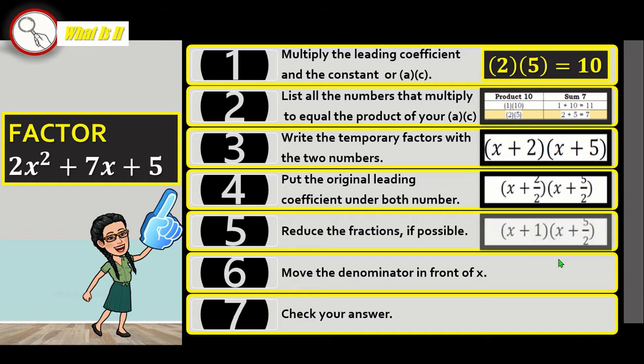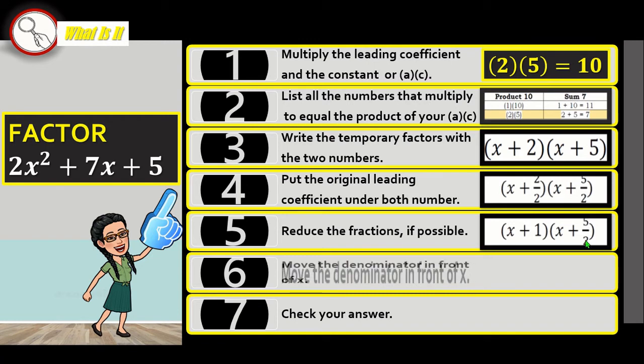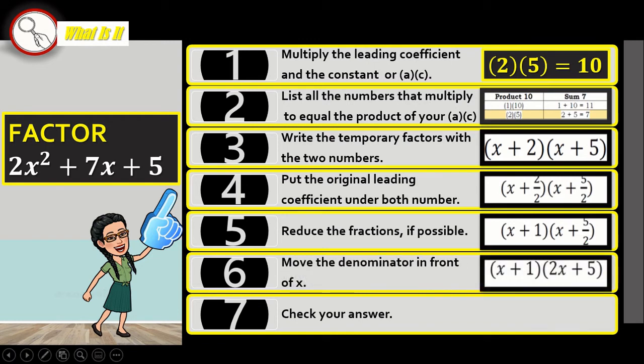And then Step 4: Put the original leading coefficient under both numbers. Put them under 2 here and under 5. Step 5: Reduce the fractions if possible. Now 2 over 2 equals 1. You can't reduce that. But 2 over 5 will not give you a whole number. So, let's leave it as it is.